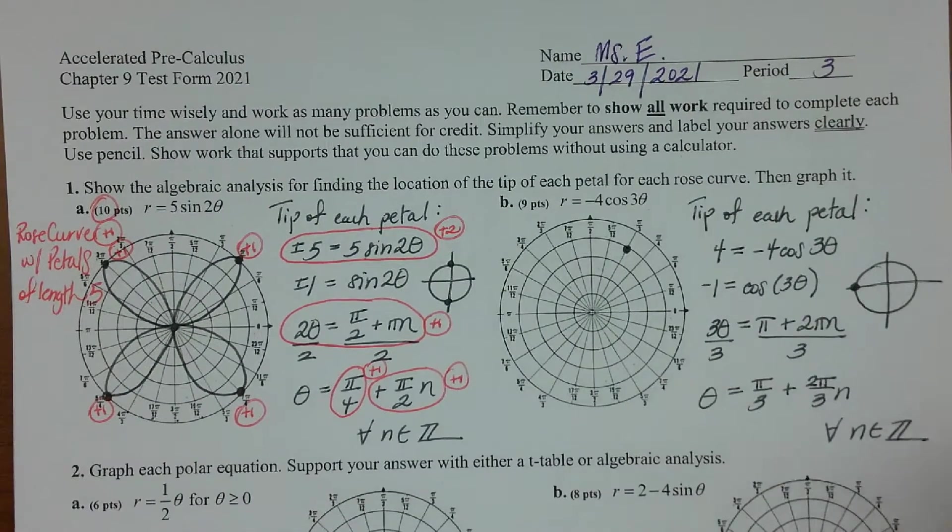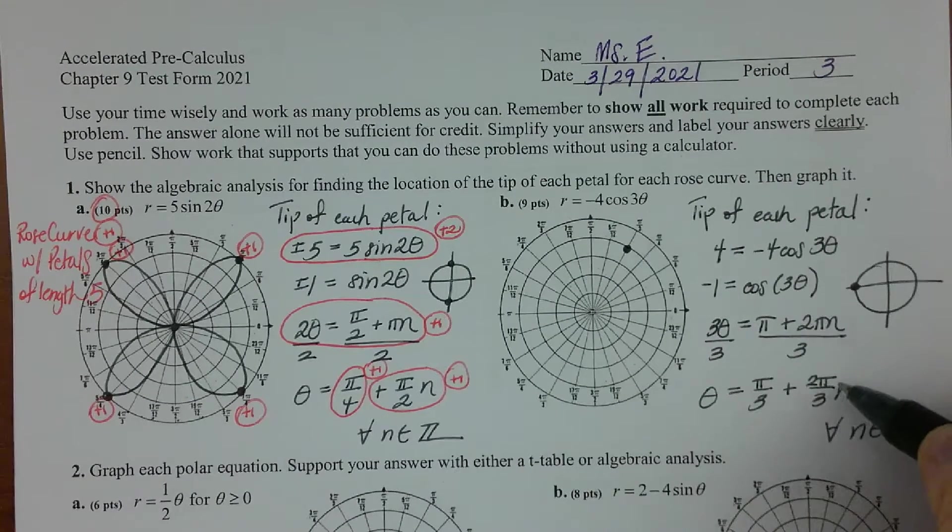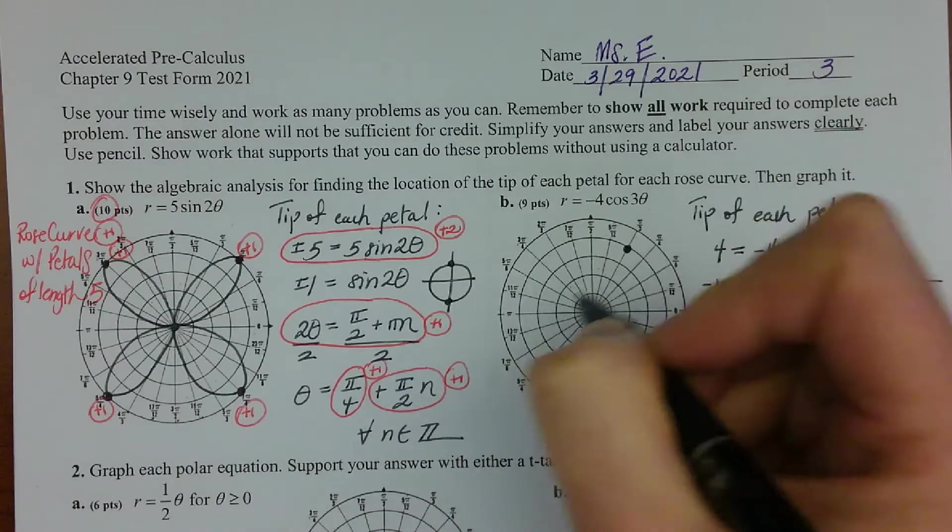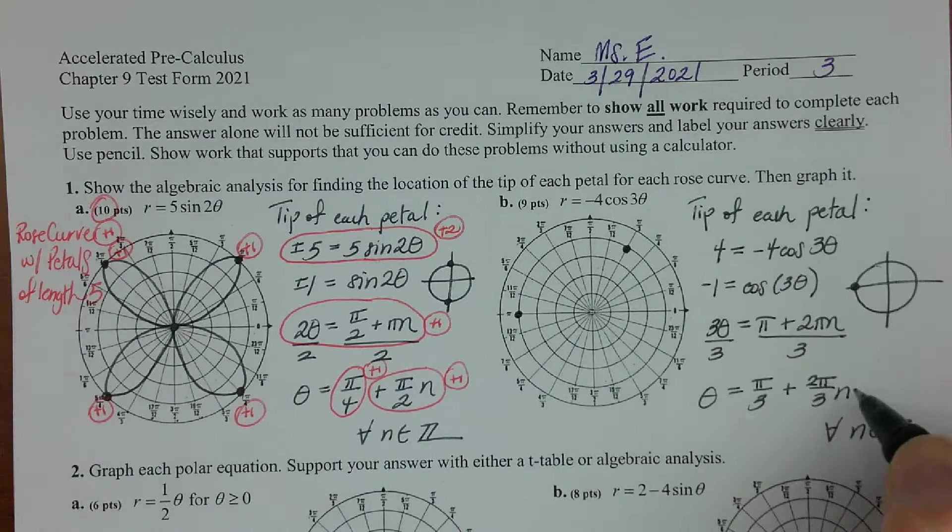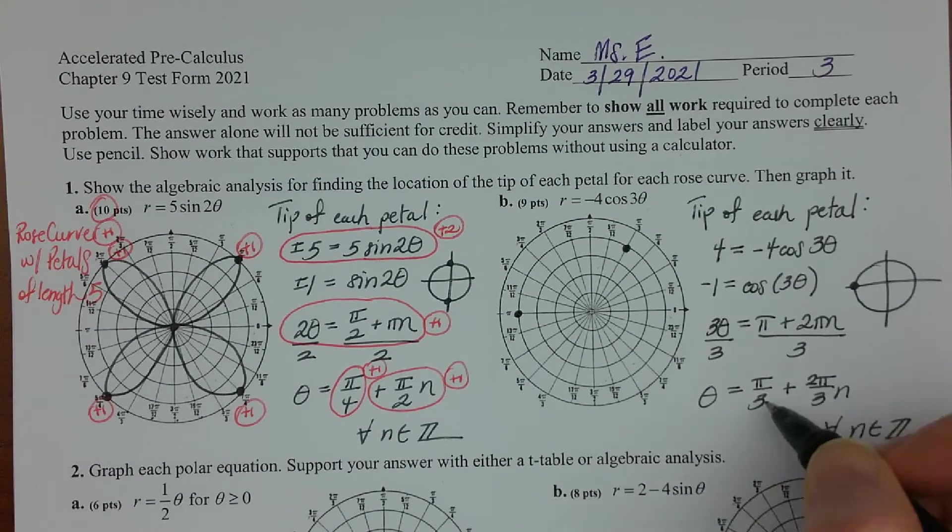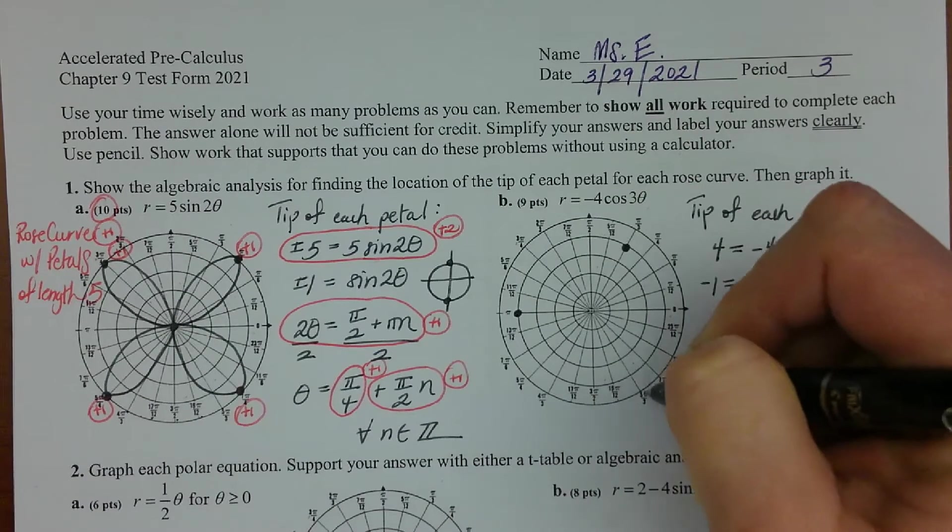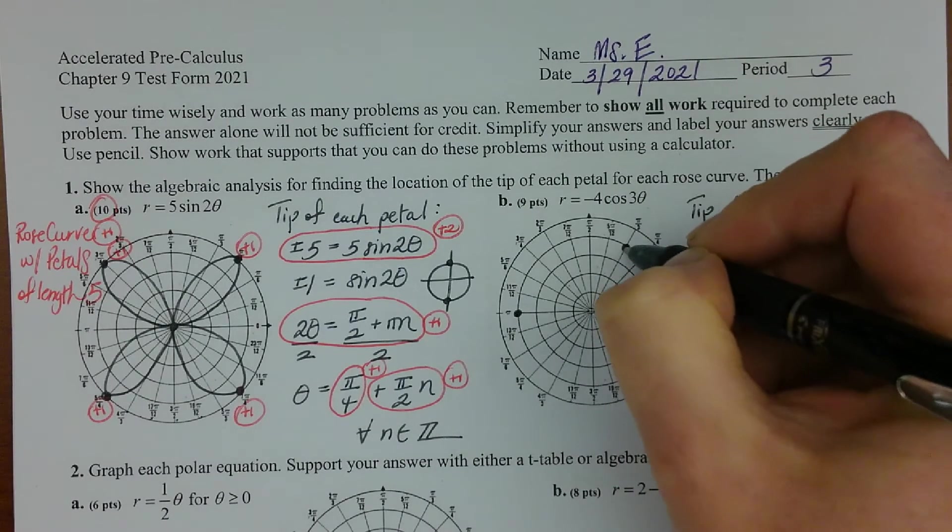And then if you were to plug one in for n, then you'd get pi over three plus two pi over three, which would be three pi over three or pi. So you're gonna go toward that, one two three four. And then if you let n be two, you'd end up with five pi over three. So toward five pi over three, that's here. Four, there we go. And then fill it in.